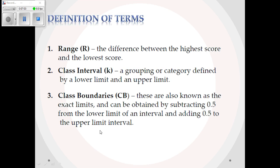Then there is class interval, denoted with small k — a grouping or category defined by a lower limit and an upper limit, using LL and UL. Then there is class boundaries, denoted CB, also known as exact limits. They are obtained by subtracting 0.5 from the lower limit of an interval and adding 0.5 to the upper limit.